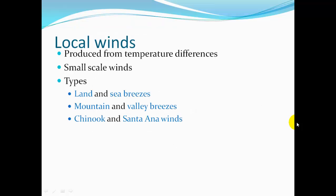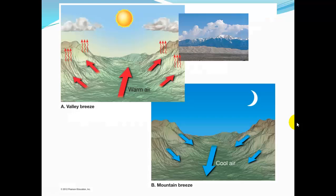Local winds are produced by temperature differences and are small-scale winds. Examples include land and sea breezes, mountain and valley breezes, and Chinook and Santa Ana winds. For mountain and valley breezes: during the day, air in the valley warms up and rises, so wind goes uphill. Then cool air comes off the mountainside as that air starts to sink and cool.